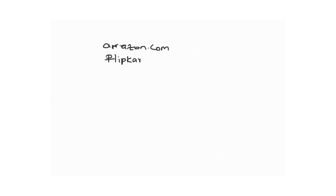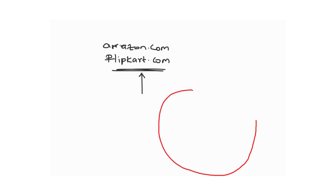On a day-to-day basis, all of us use DNS — probably some of you are aware and some are not. For example, on a day-to-day basis we use amazon.com or flipkart.com. When you use these things, you are directly or indirectly using DNS. In previous classes, when we deployed applications like Jenkins or a simple Python application, we created a VPC with public and private subnets.